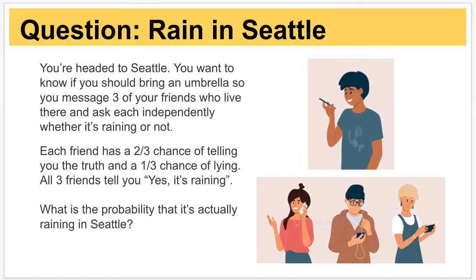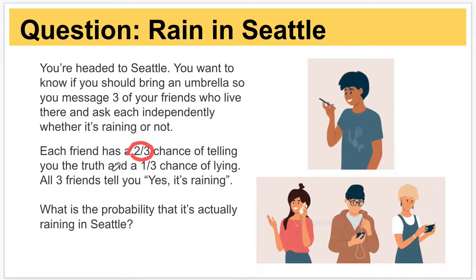Here's the scenario: you're headed to Seattle and you want to know if you should bring an umbrella. You message three of your friends who live there and ask each independently whether it is raining or not. Each friend tells you yes it is raining, but there is a chance they could be lying. Each of them has a two-thirds chance of telling the truth and a one-third chance of lying.